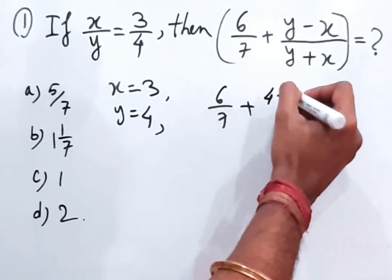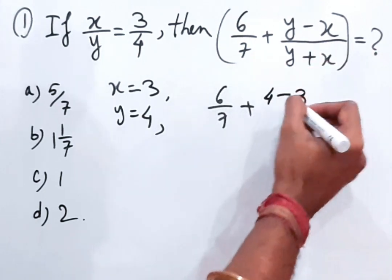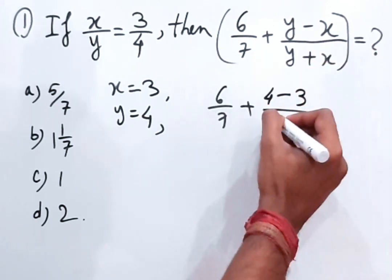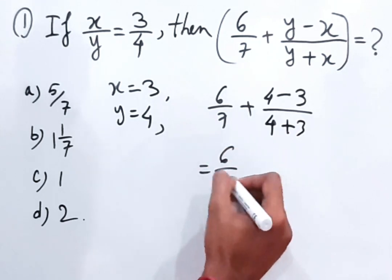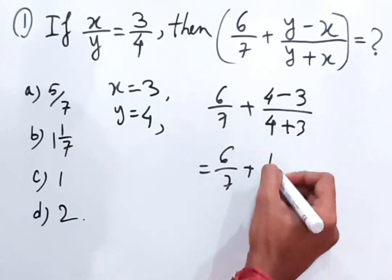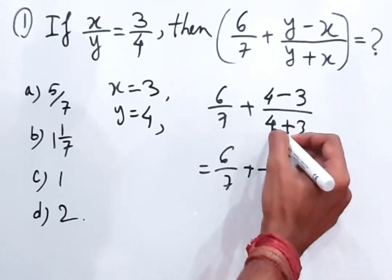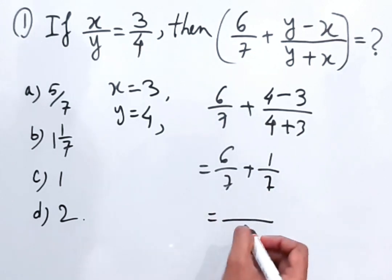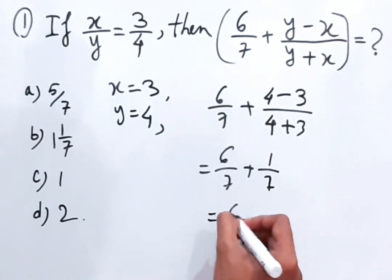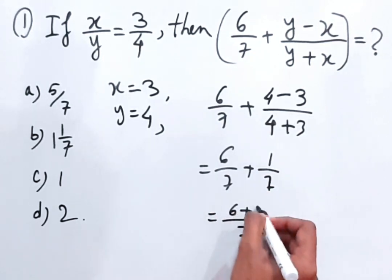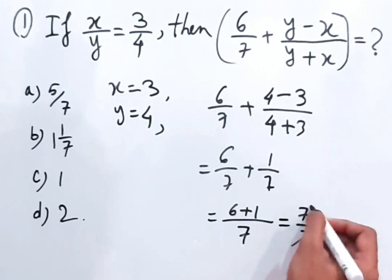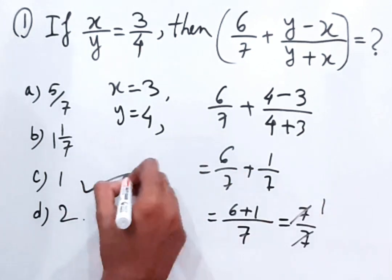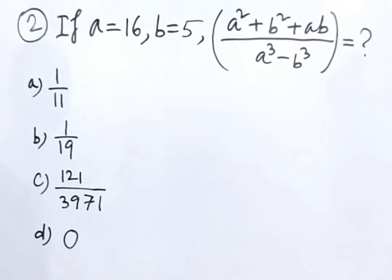So 6/7 + (4 - 3)/(4 + 3), which gives 6/7 + 1/7. The LCM is 7, so 6 + 1 = 7, meaning 7/7 = 1. So 1 is the answer.